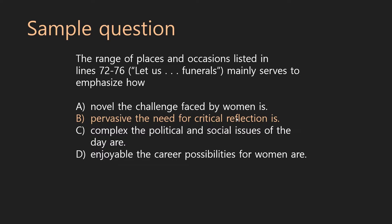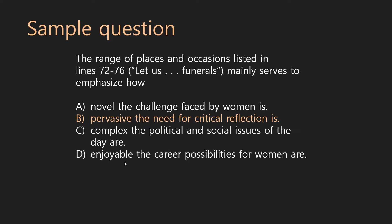C says 'how complex the political and social issues of the day are' — irrelevant, didn't mention that. However, if you had read the passage, which was about women's rights in that era, a lot of you would pick C based on the passage. But when we get back to those details — the evidence — nothing about those two sentences mentioned political and social issues. It's just 'think everywhere,' and that's why you cannot pick that as an answer choice. D says 'how enjoyable the career possibilities for women are' — that's a throwaway answer. Enjoyable? Career possibilities? That's not anywhere either. So B is our confirmed answer.